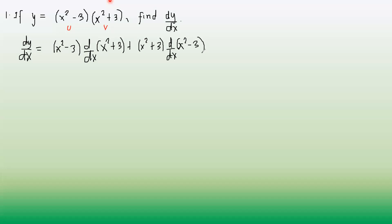By definition, this is u and this is v. So we have u dv plus v du — that is our formula. Now we're going to apply the derivative of a sum or difference, and also the power rule x raised to n, as well as the constant rule. These are applications of our previous formulas.